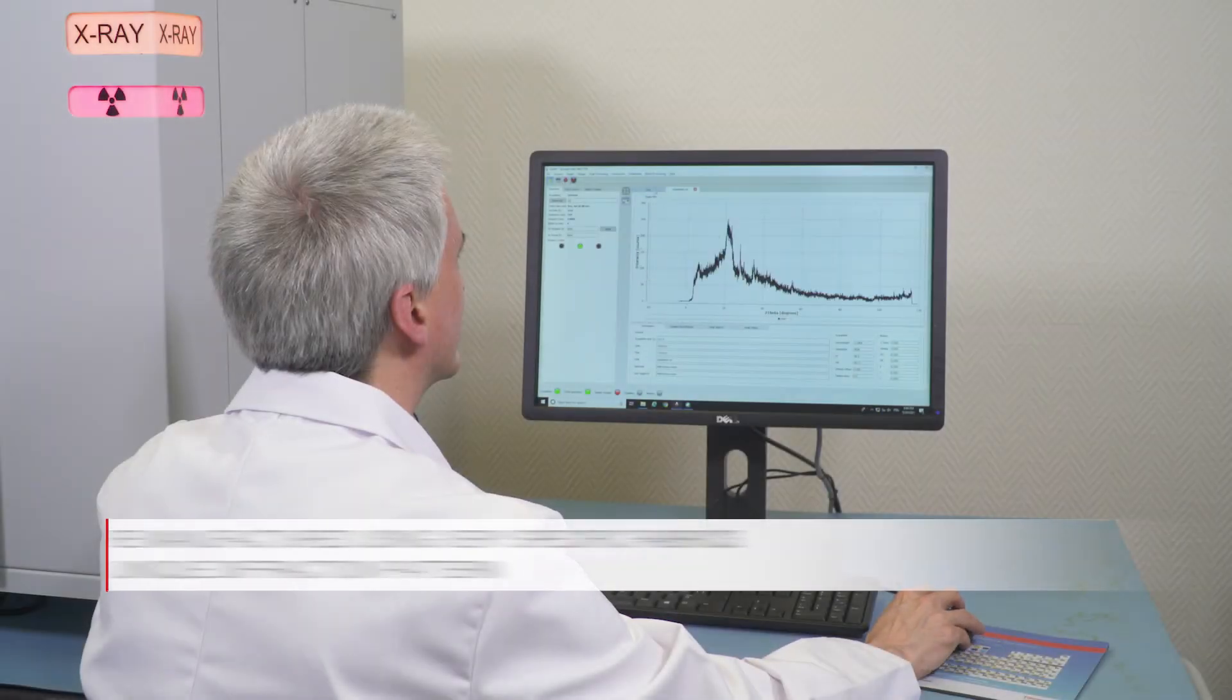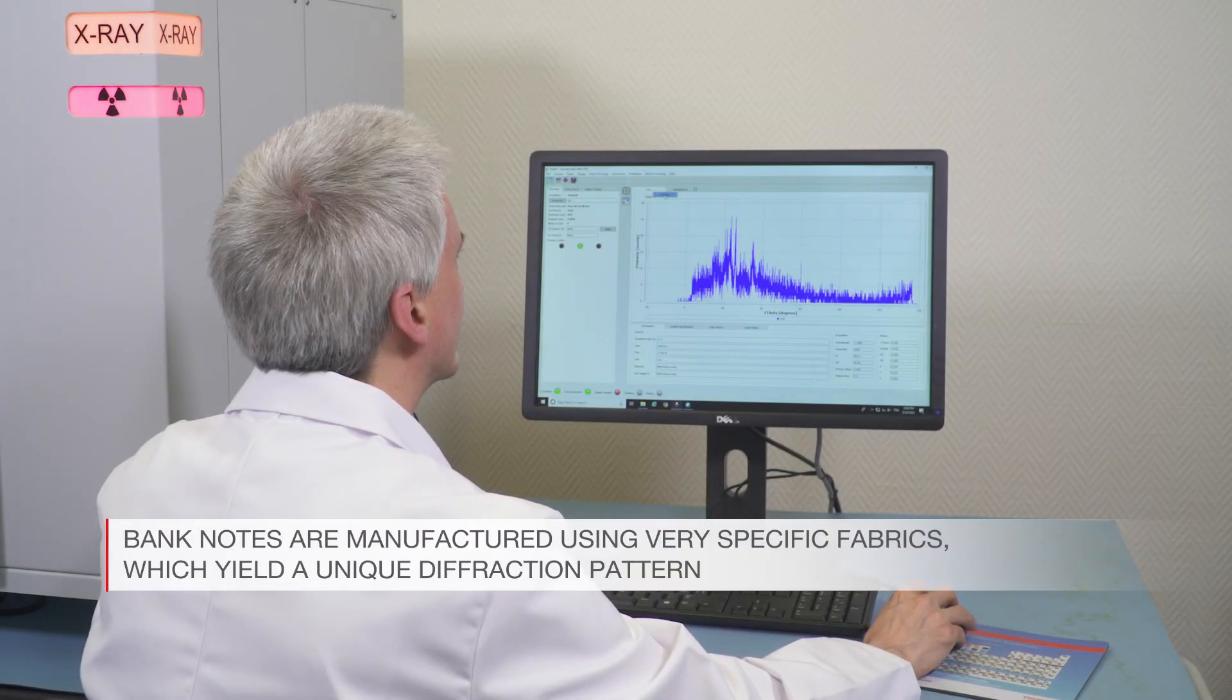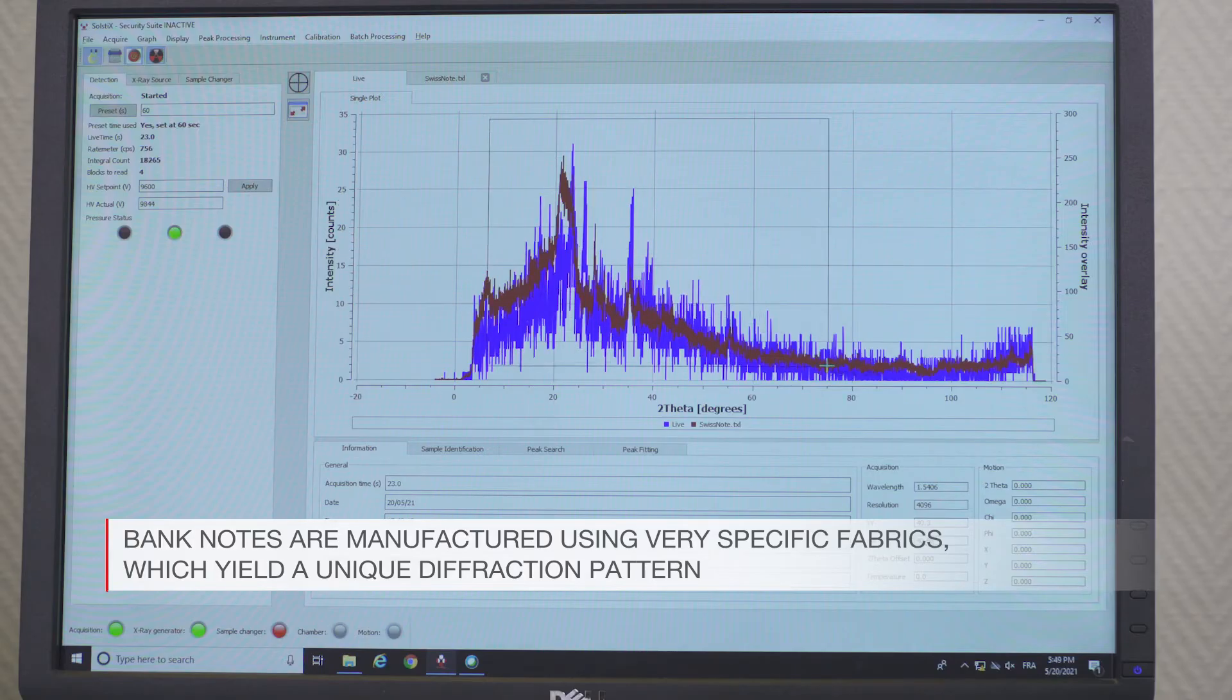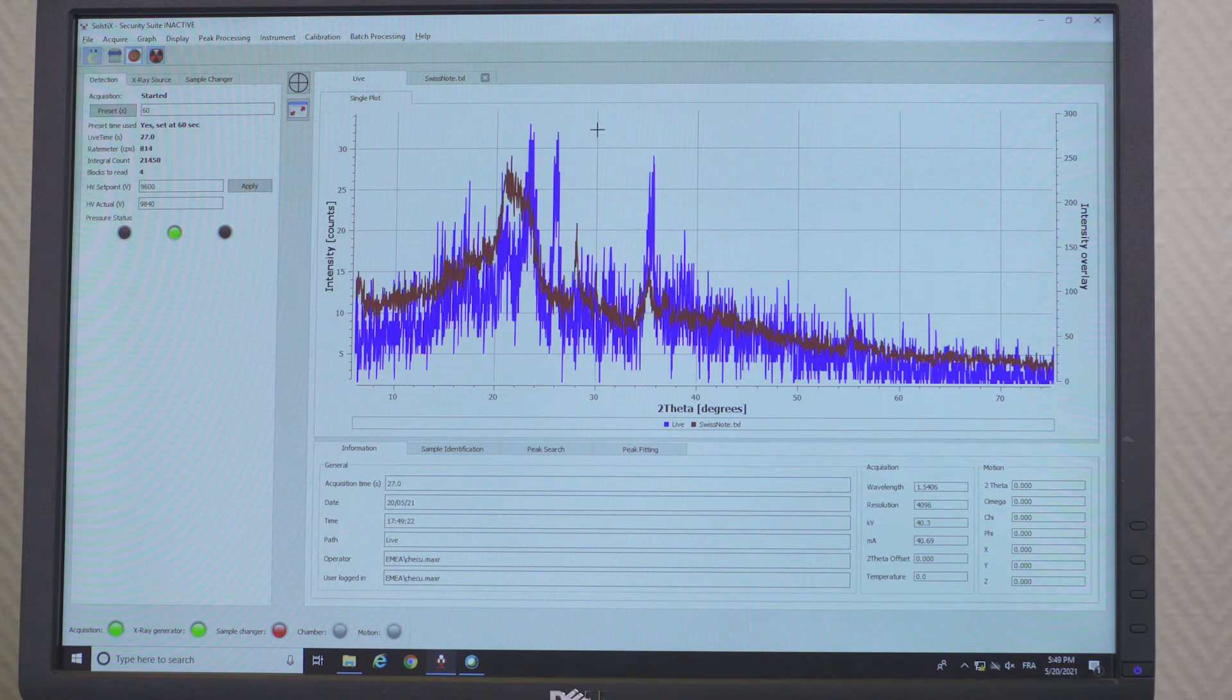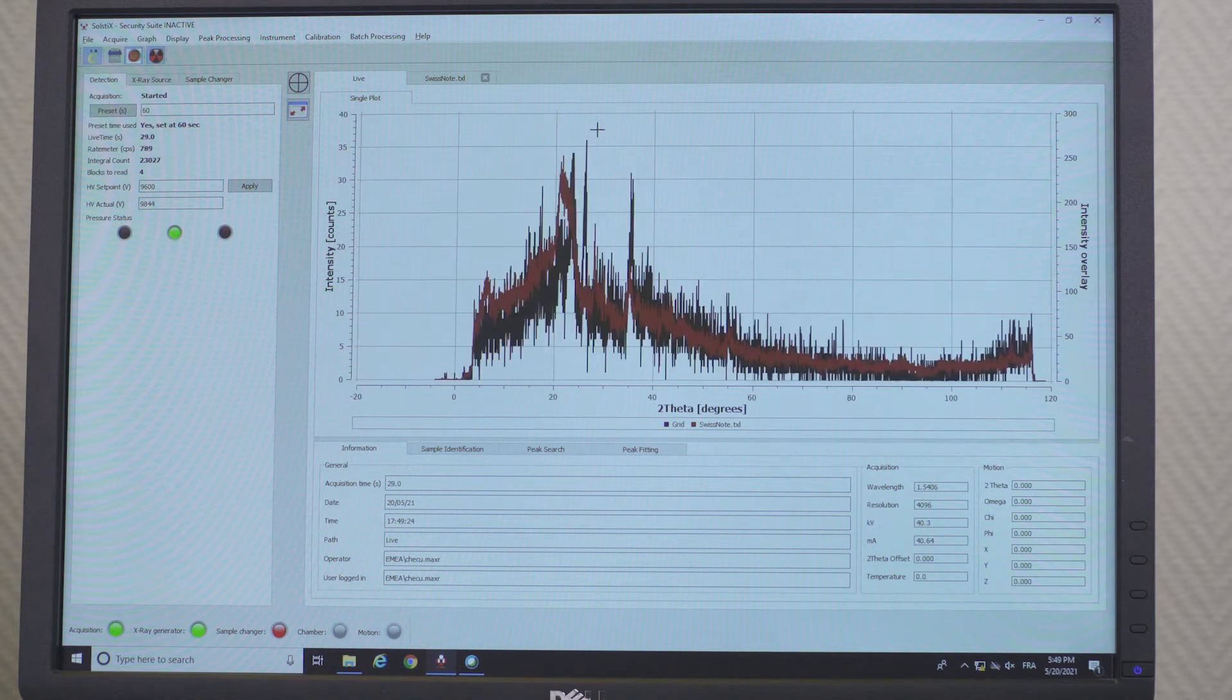Banknotes are manufactured using very specific fabrics of artificial or natural origin, which yields a unique diffraction pattern. Comparative analysis of real and counterfeit notes can be achieved within minutes.